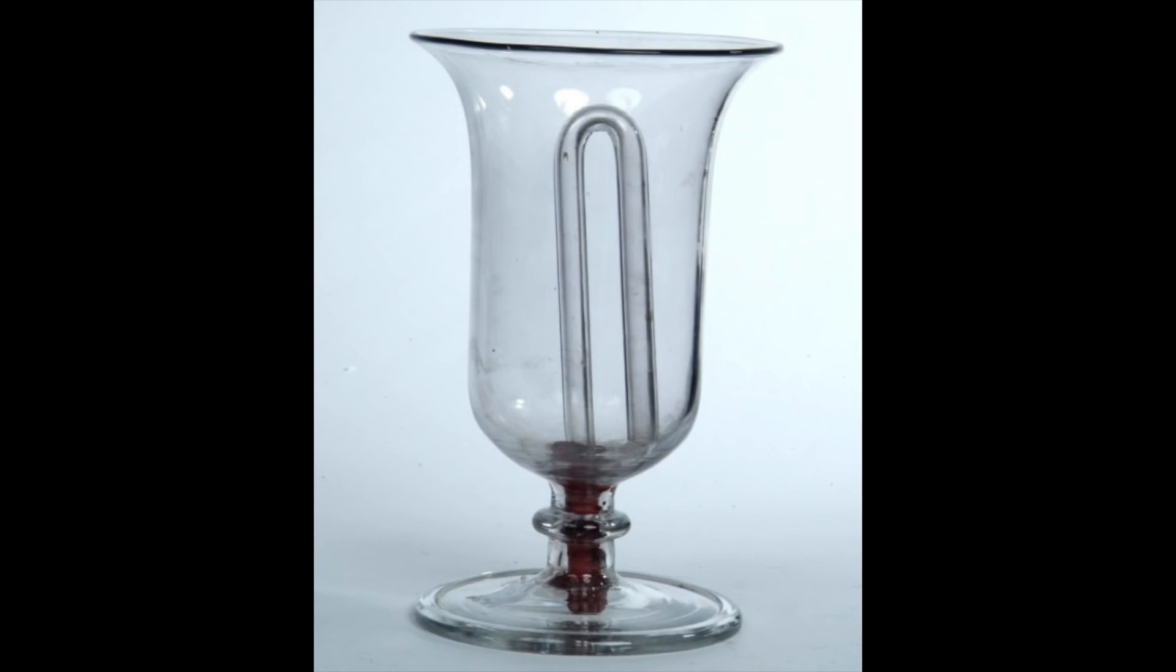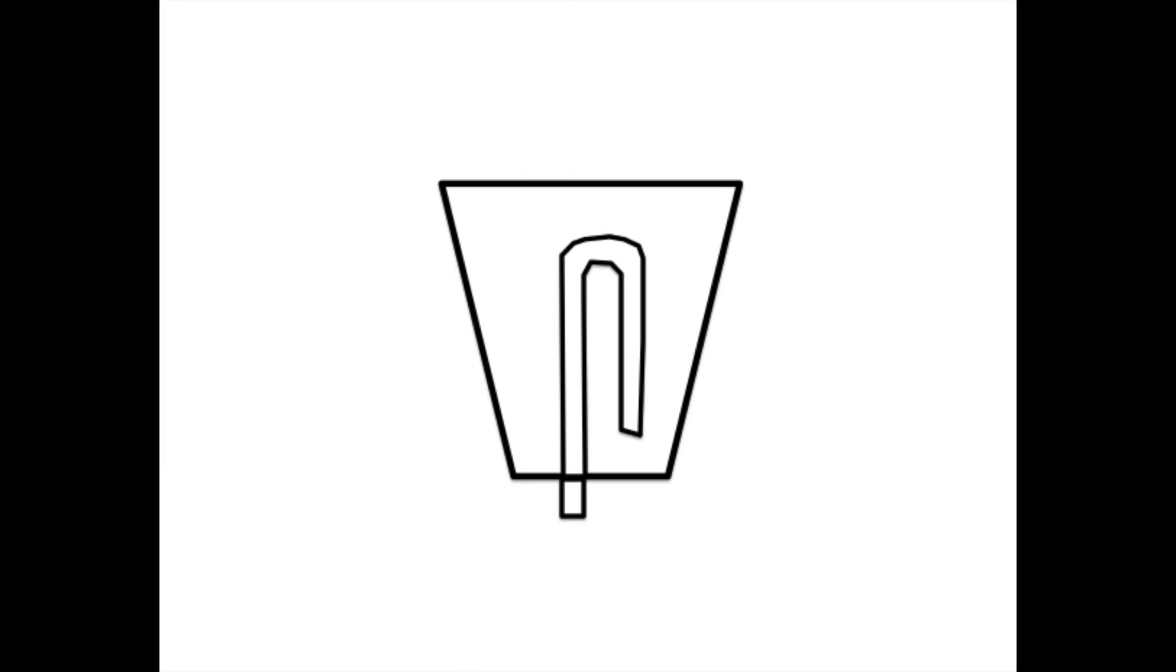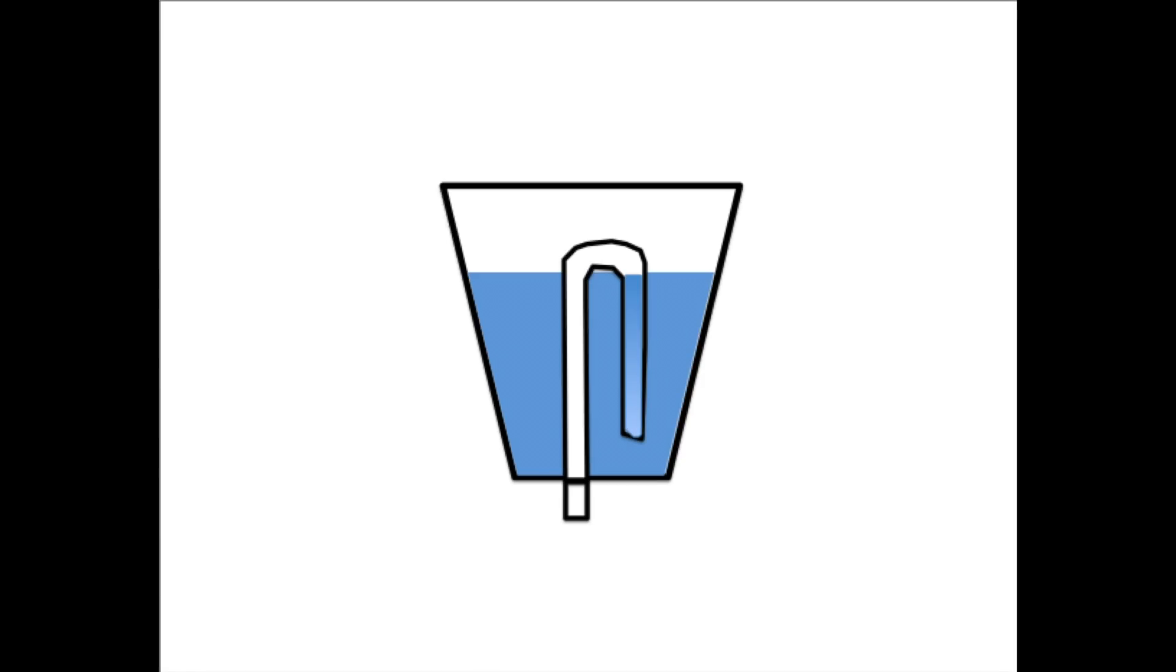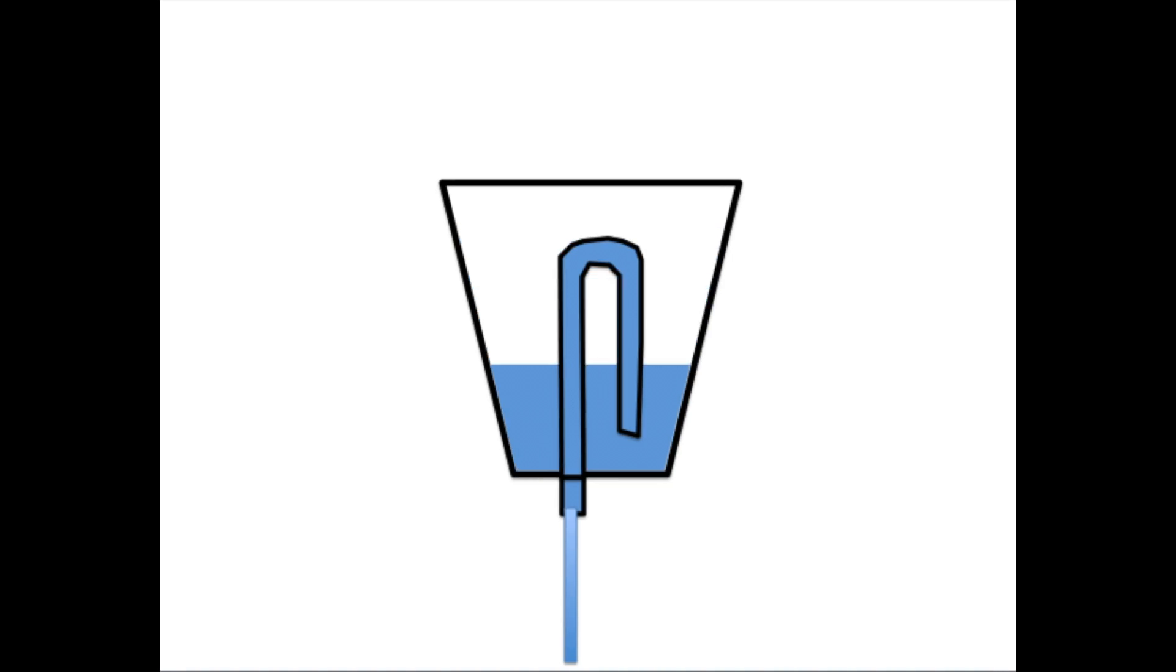Another popular example of siphons is called the Tantalus cup. The siphon tube is built into the cup and it can be filled up to a certain level without the siphon starting. Fill the cup higher than the top of the tube and the siphon will cause the liquid to completely drain out.